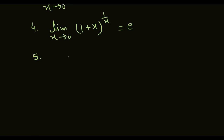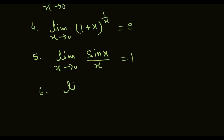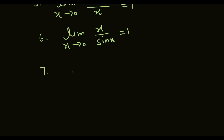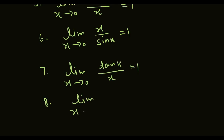Fifth formula is: limit x approaches to 0, sin x upon x, equal to 1. Sixth formula is: limit x approaches to 0, x upon sin x, equal to 1. Seventh is: limit x approaches to 0, tan x upon x, equal to 1. Eighth: limit x approaches to 0, x upon tan x, is 1.